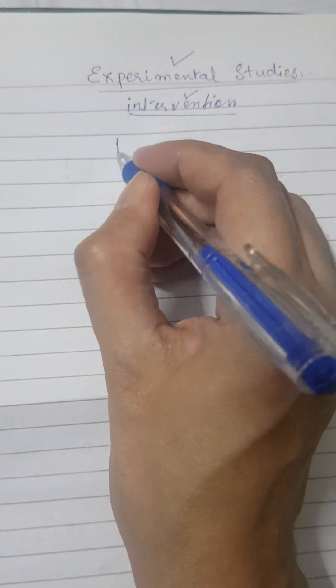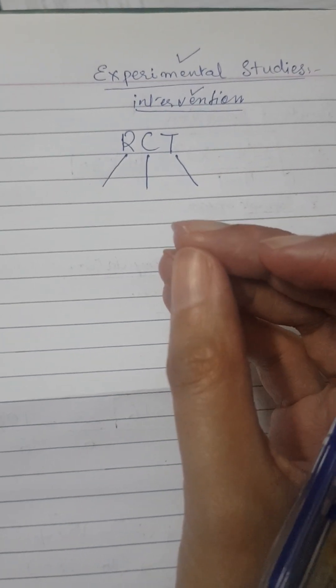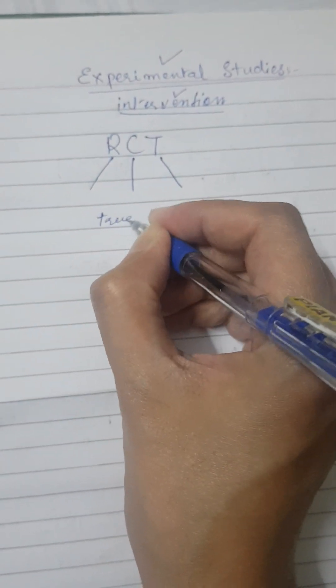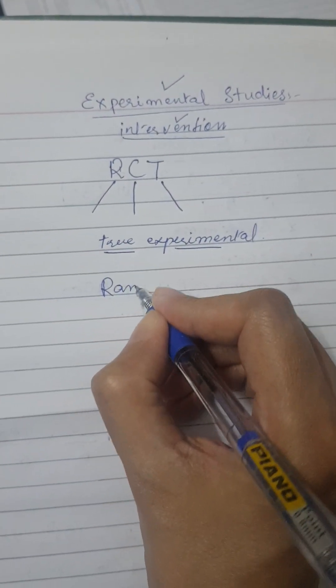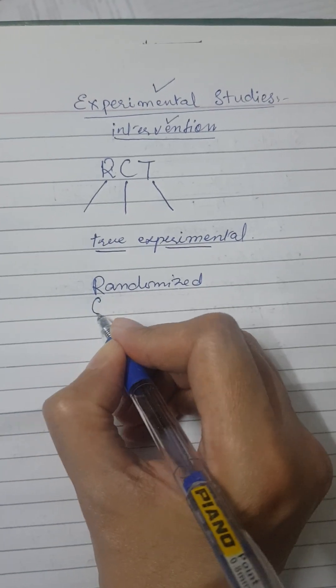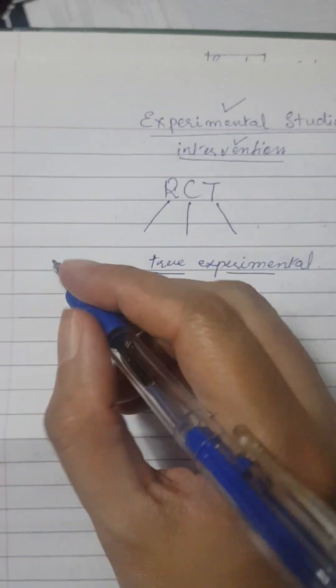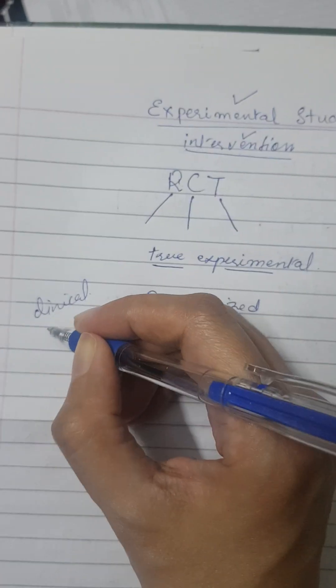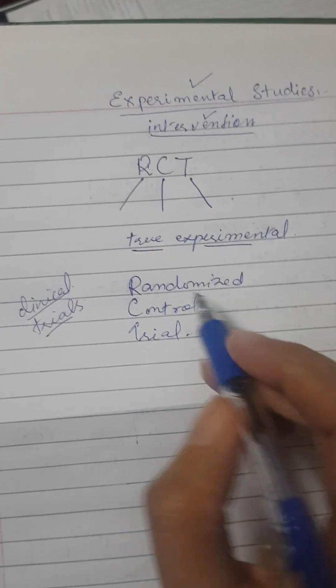Always remember, a true experimental study is called an RCT — Randomized Control Trial. RCTs are also called clinical trials, and they are very common in clinical studies, especially for the testing of new drugs.